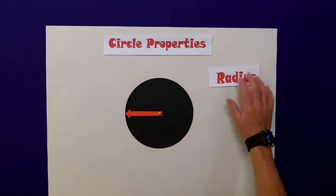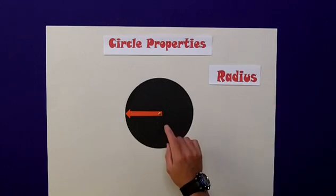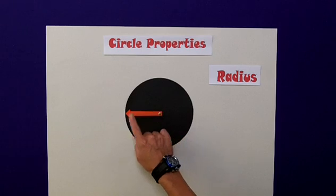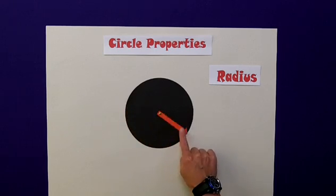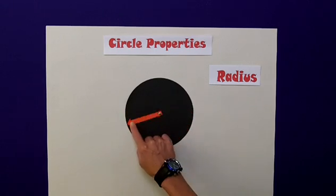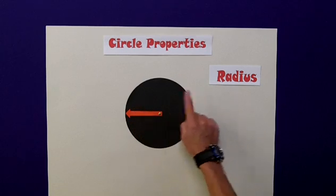The first one I'm going to talk about is the radius of any circle, and this is the distance from the center to any point on the outside edge. It is always the same no matter where you are on that circle, and that is the radius.